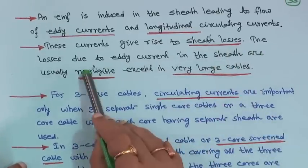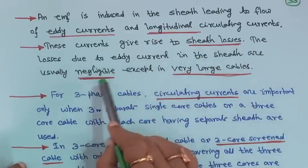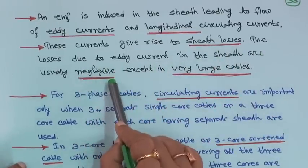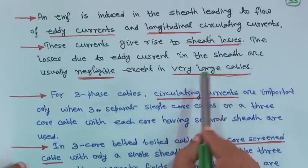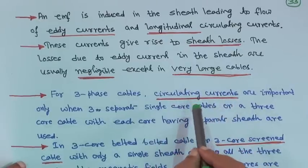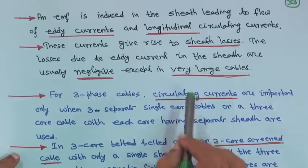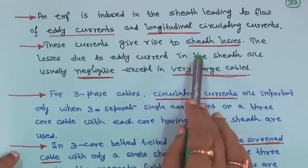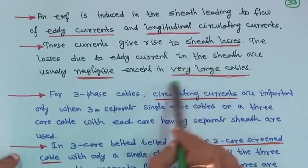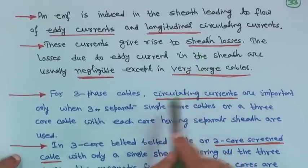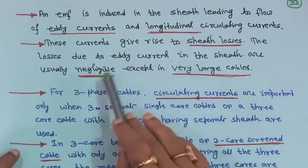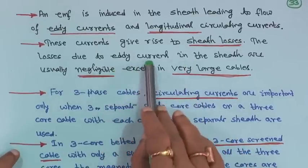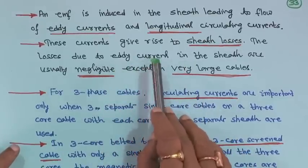The losses due to eddy current in the sheath are usually negligible except in very large cables — meaning high voltage 3-phase cables — or very long cables in terms of kilometers. Otherwise, that eddy current loss is negligible.